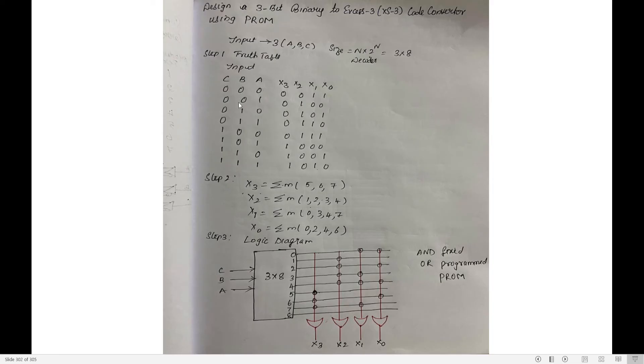This is the circuit of PROM. So you have designed a 3-bit binary to XS3 code converter using PROM. X3 is min terms 5, 6, 7. X2 is min terms 1, 2, 3, 4. This is how you need to design it.